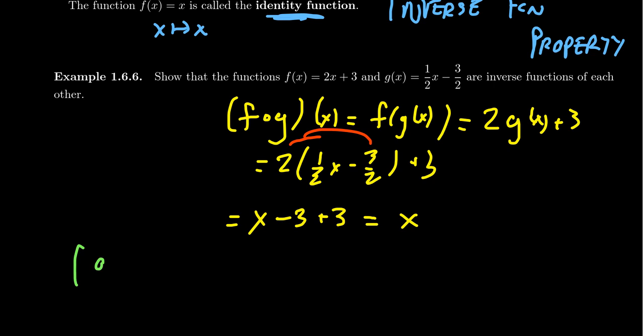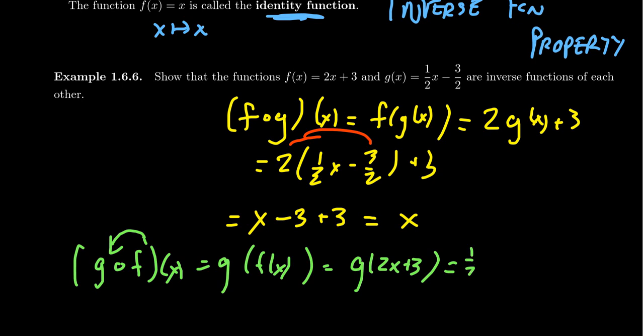G composed with F of X. That is, we're going to put F inside of G. G of F. Which conversely, if you want to, that just means you're going to take G of 2X plus 3. You could evaluate that first and put that inside of the formula for G. You get 1 half times 2X plus 3 minus 3 halves.